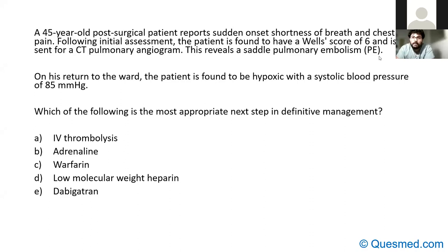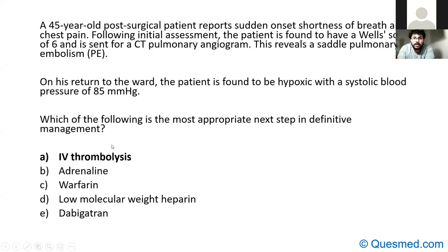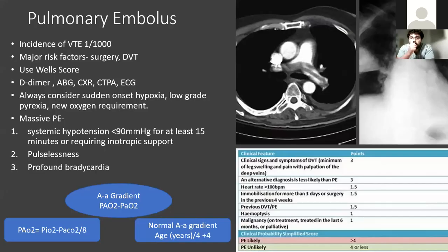In this context you would want to give IV thrombolysis. PE is something you'll be dealing with often. Remember pulmonary embolus is not just about thrombus — it's any occlusion of the pulmonary vasculature. It can be a fat embolus, which is often missed, or amniotic fluid embolism.